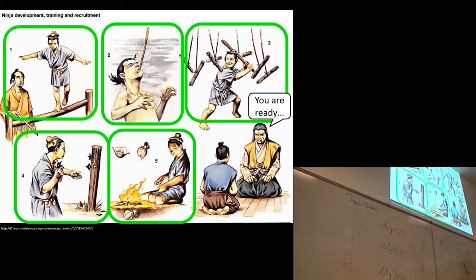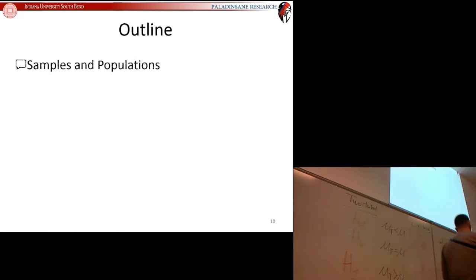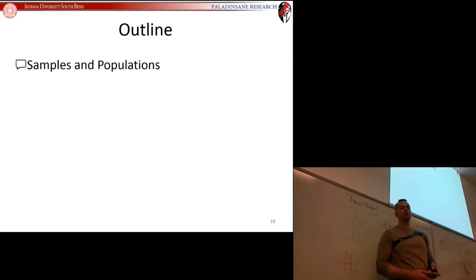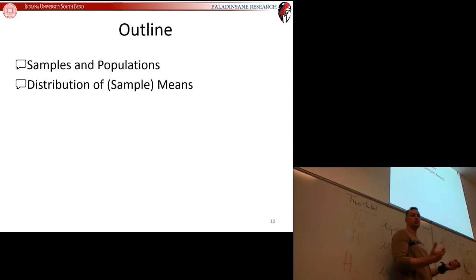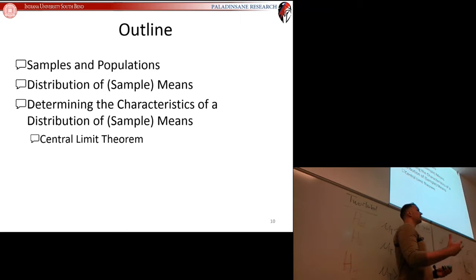How do you determine that comparison distribution? How do you figure out what that comparison distribution is? In order to do that, we are going to go back to samples and populations—that is the basic, fundamental principle upon which all hypothesis testing is built. We're going to go back to our distribution of sample means and how to calculate and determine its characteristics. It all comes back to the central limit theorem, that bit of math and magic that makes psychology possible.